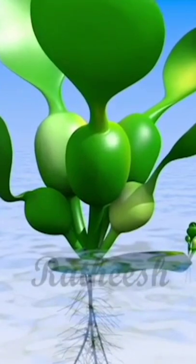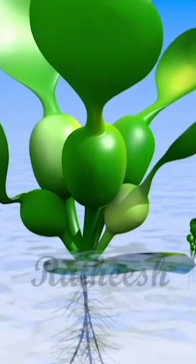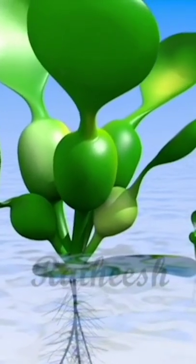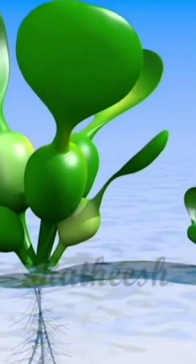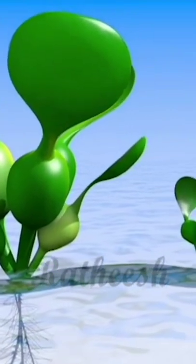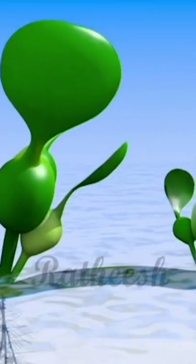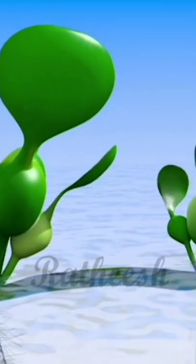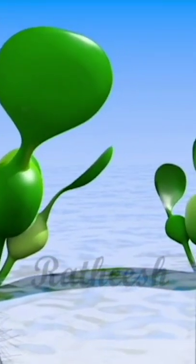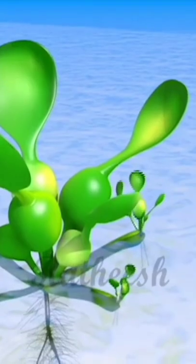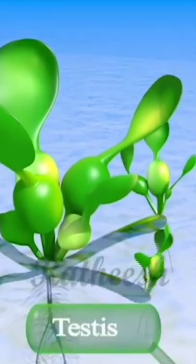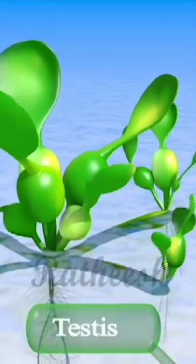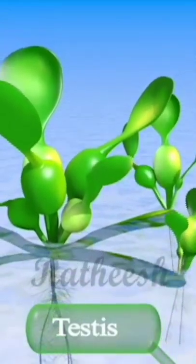During asexual reproduction, the parent plant produces young plantlets from its short nodes. The internodes of the plantlet then elongate slightly. This short and thick internode is the offset.